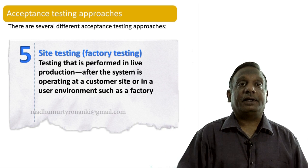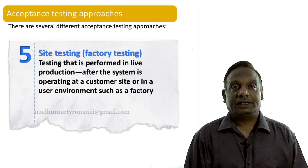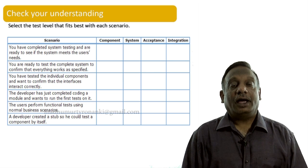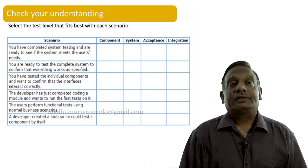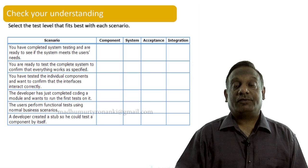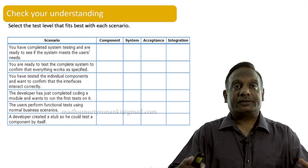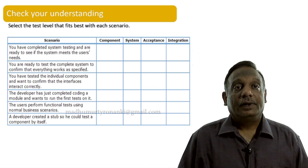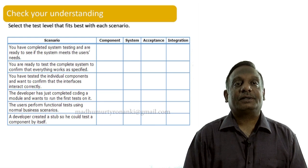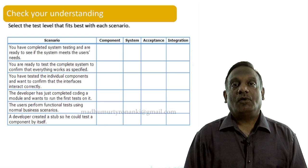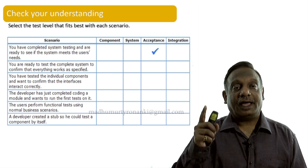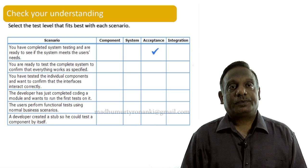Let us answer a question to check your understanding. There are six scenarios on the screen — you have to identify which level of testing is needed for each. First scenario: you have completed system testing and are ready to see if the system meets the user needs. What level of testing has to be performed? Yes, that is acceptance level testing.